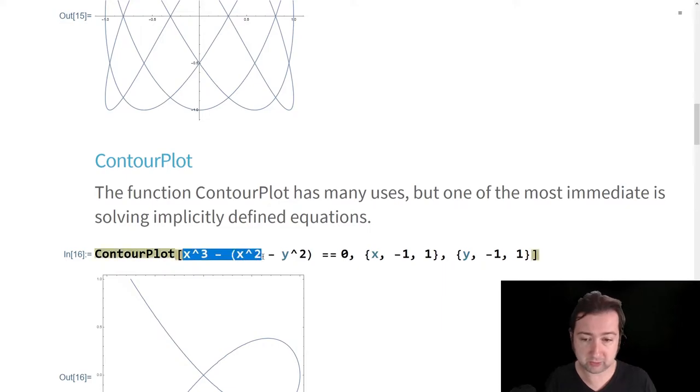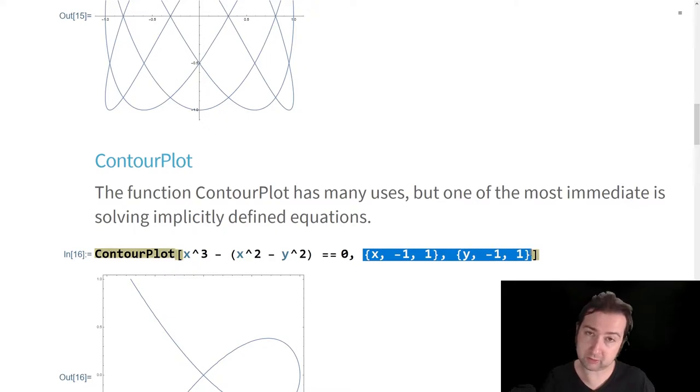If you have an implicitly defined function, in this case, we're looking at the function x to the third minus x squared minus y squared is equal to zero. I haven't solved this explicitly for y or x because to do so would involve square roots and plus or minuses. But I can still create a contour plot where I look at the relation between x and y implicitly defined by the equation.